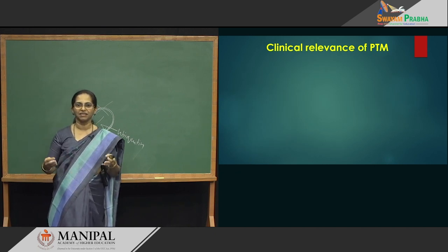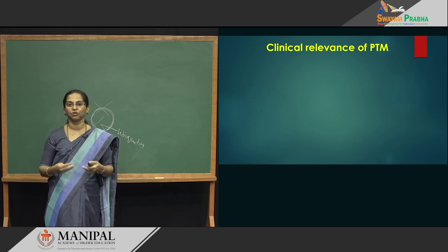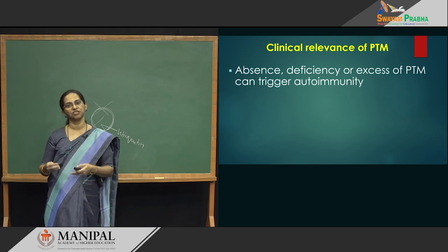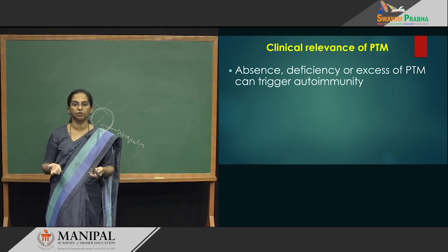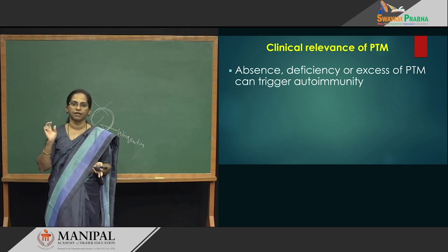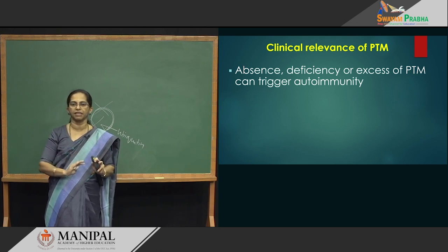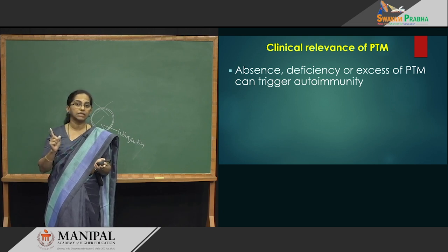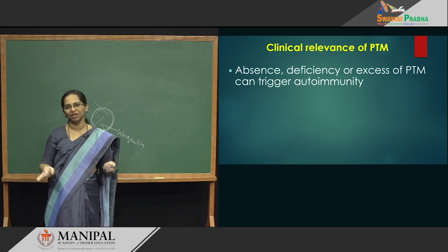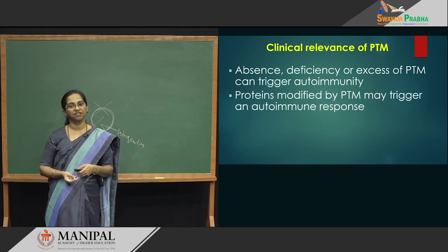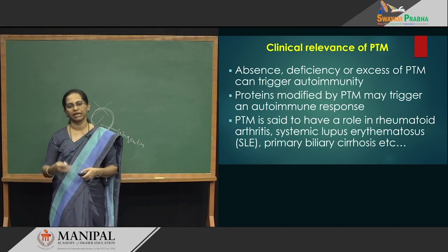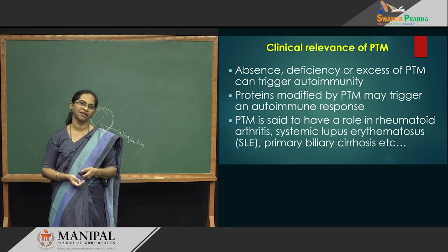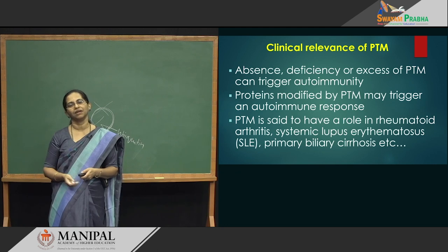What is the clinical relevance? Why do we need as medical students to know PTM? If there is absence or deficiency of PTM, what will happen in the body? It will trigger autoimmunity. You will not have the normal protein; it becomes a different protein. The body recognizes this different protein as non-self. If it is self, the body allows the protein to remain there. But if it is totally different, the body says this is not the normal protein and triggers autoimmunity, starting to degrade all the normal proteins — and that becomes disease. Proteins modified may trigger an autoimmune response. This is the basis for diseases like rheumatoid arthritis, systemic lupus erythematosus, or primary biliary cirrhosis.